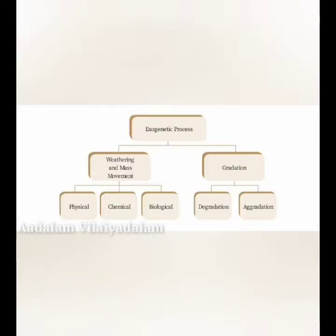Now we'll see about weathering and its types. Weathering is a disintegration and decomposition of materials of earth's crust by their exposure to the atmosphere. Movement of huge volumes of weathered rock material down a slope due to gravity is called mass movement or mass wastage. The nature and magnitude of weathering differs from place to place and region to region. There are three types of weathering: physical weathering, chemical weathering, and biological weathering.